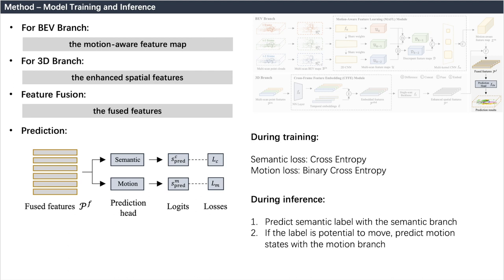For the fused features, we feed it into the prediction head which has two branches. One is the semantic head and the other is the motion states head. During training, we use cross entropy as the loss on the semantic head, and binary cross entropy as the loss on the motion states head. When the training is completed, the sample is first reasoned on the semantic head, and the prediction for the semantic label is obtained. If the label is potential to move, the motion states head predicts motion states with the motion branch.